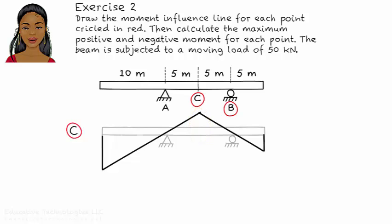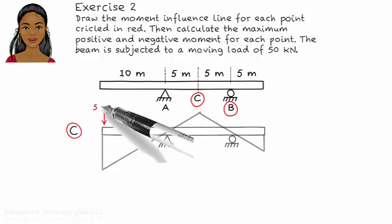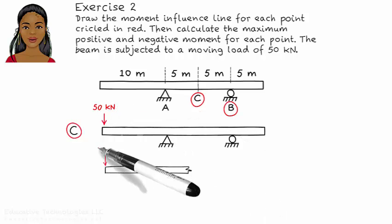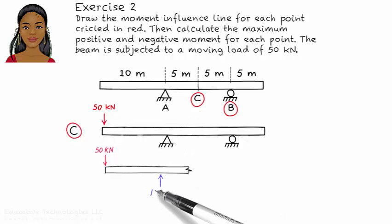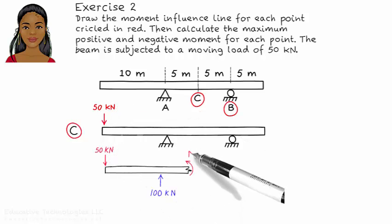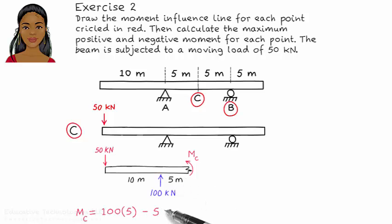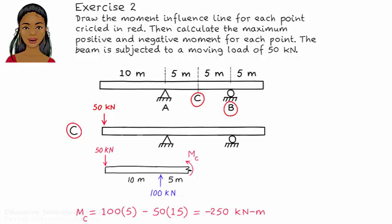To determine the magnitude of the negative moment, place the load at the left end of the beam and analyze the beam. This gives us a bending moment of negative 250 kNm.